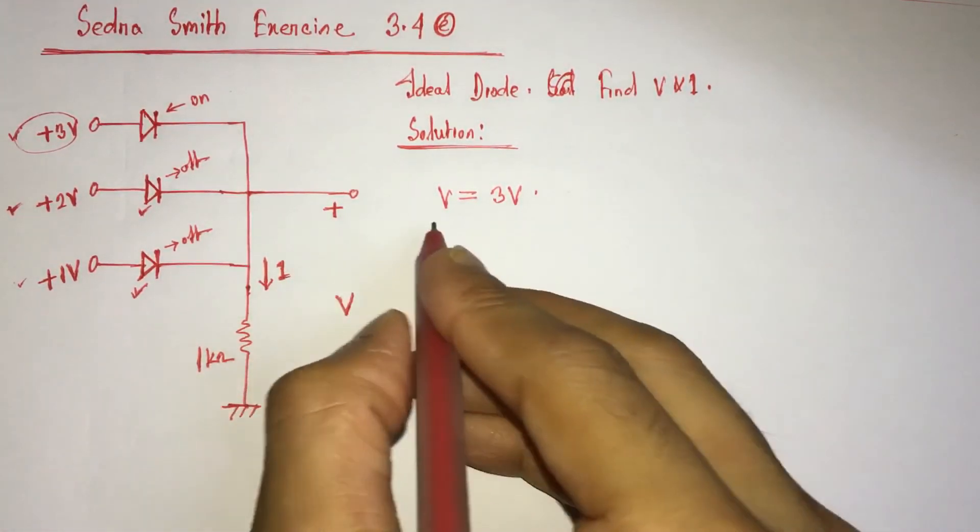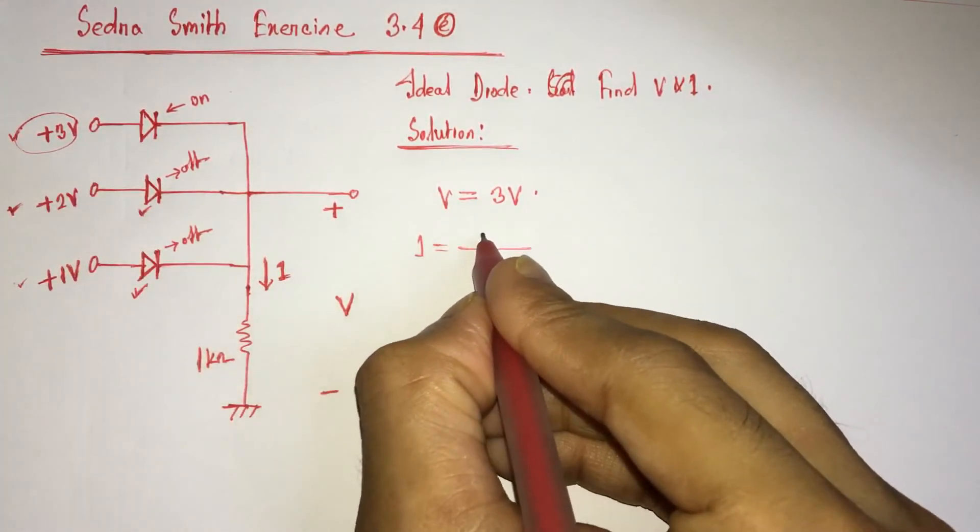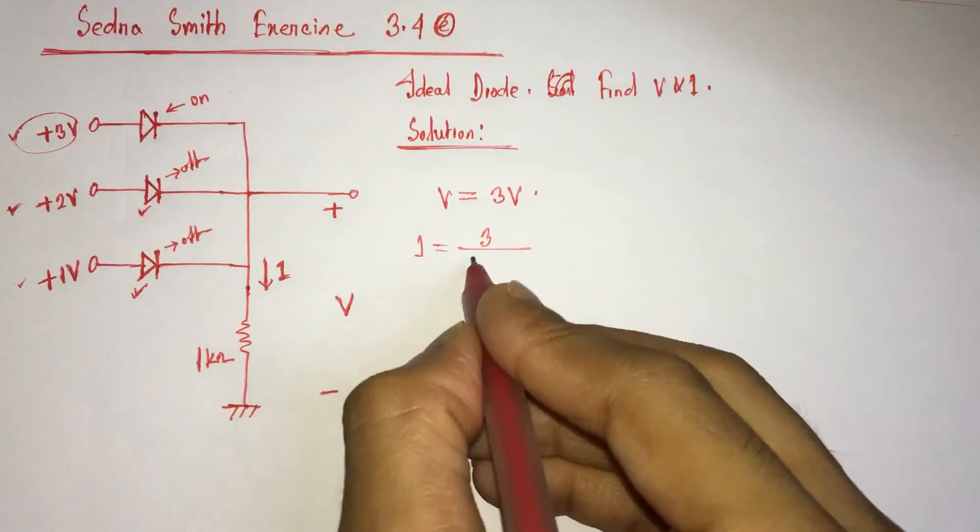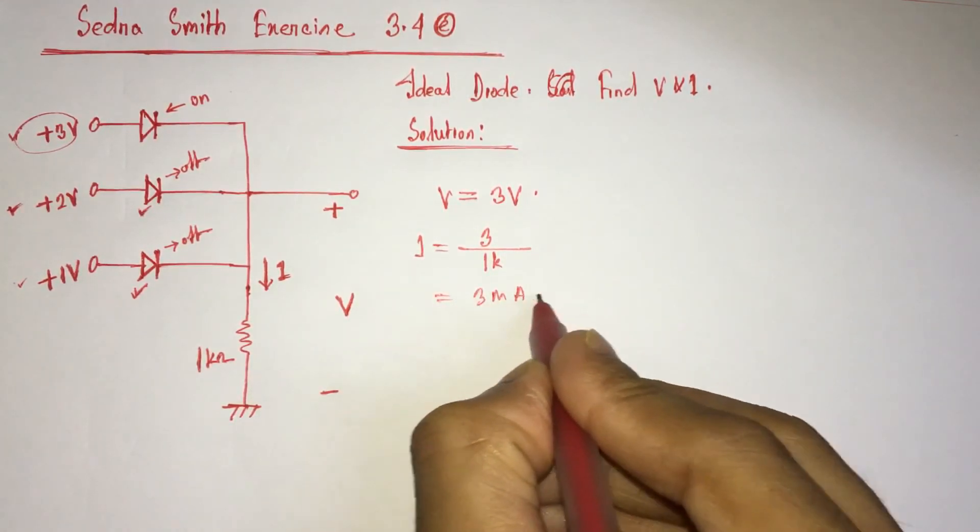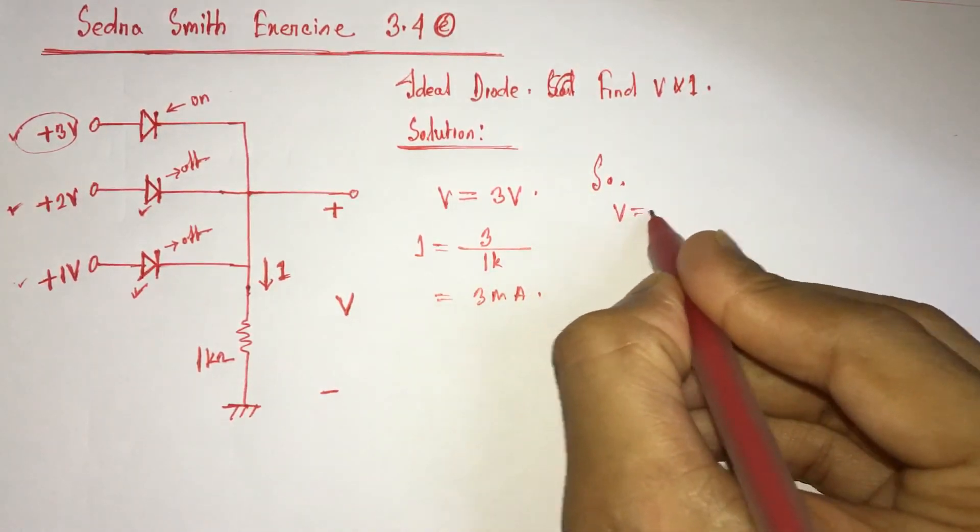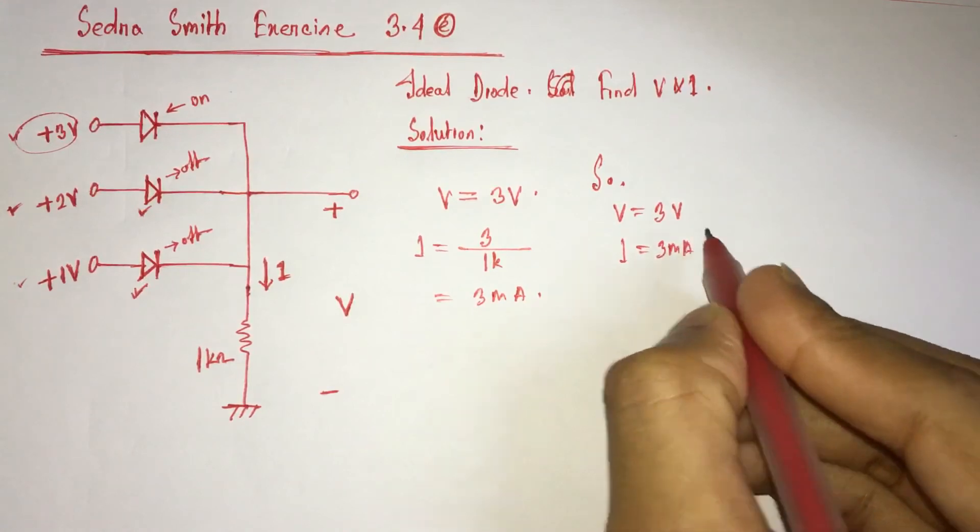Now we can determine I easily by dividing voltage V by this resistance 1 kilo ohm, that is 3 milliampere. So V equals 3 volt, I equals 3 milliampere.